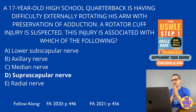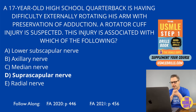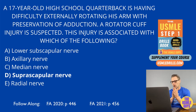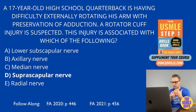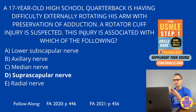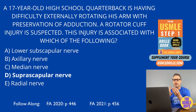Let's kick off our MSK section with a really super high-yield topic: the rotator cuff. There are four components of the rotator cuff, and we can remember the muscles with the SITS mnemonic. SITS represents supraspinatus, infraspinatus, teres minor, and subscapularis.